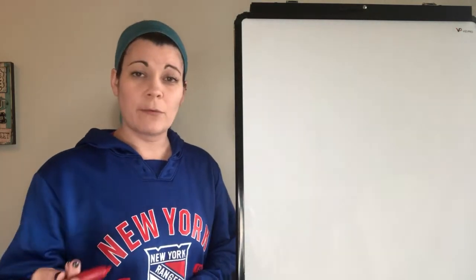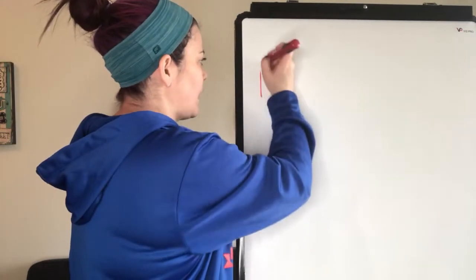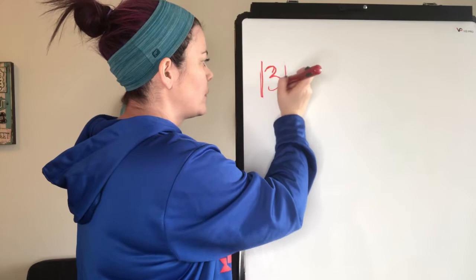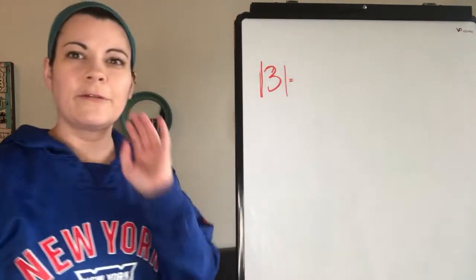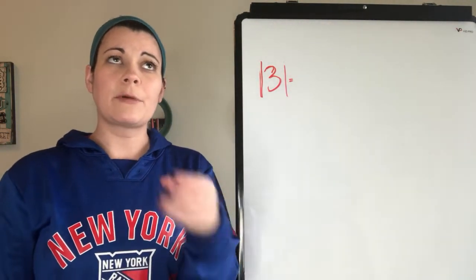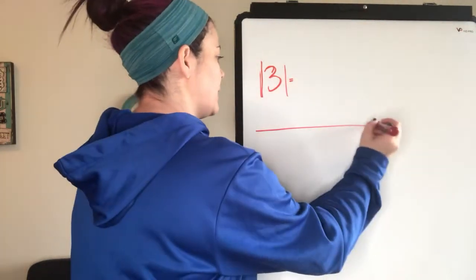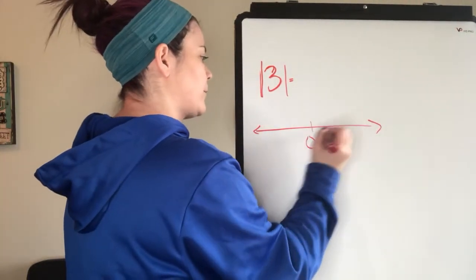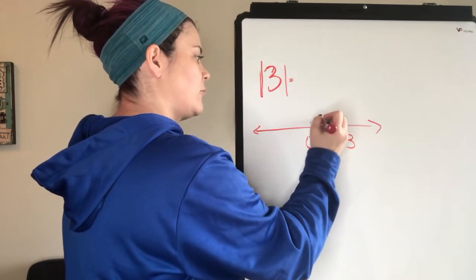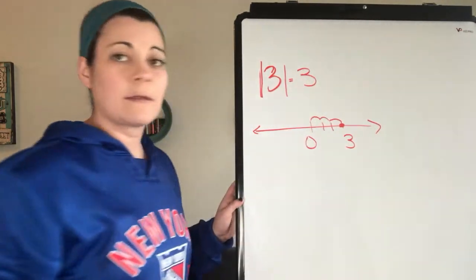First of all, we just want to review what absolute value is. For example, the absolute value of 3. Absolute value is the number of spaces it is from 0. If we think on a number line, 3 is 1, 2, 3 spaces away from 0. So the absolute value of 3 is 3.